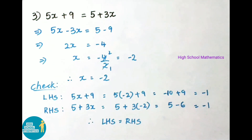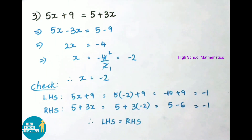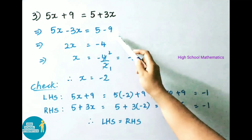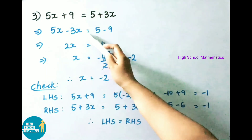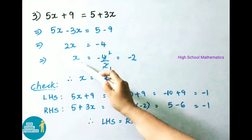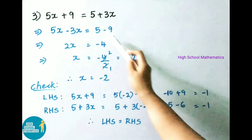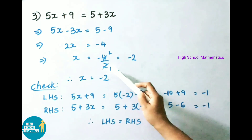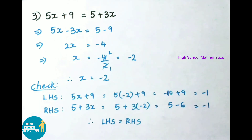Third sum: 5x + 9 = 5 + 3x. Plus 3x on transposing becomes minus 3x; plus 9 on transposing becomes minus 9. So 5x − 3x = 2x and 5 − 9 = −4. Now x = −4/2 = −2.